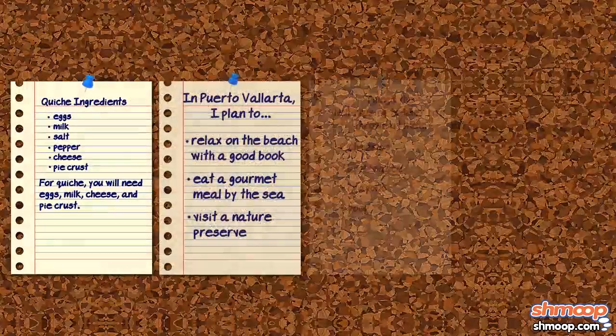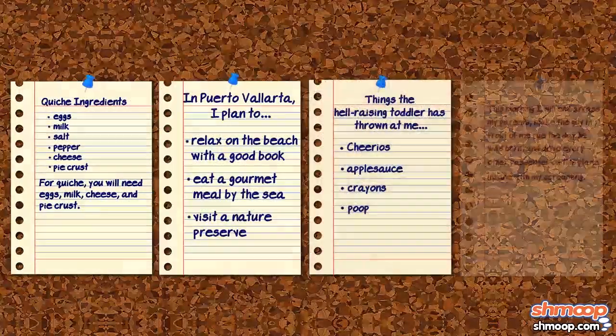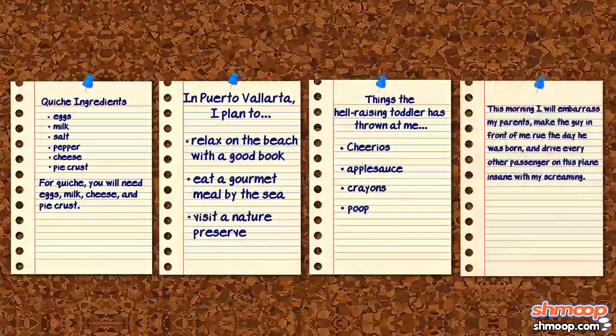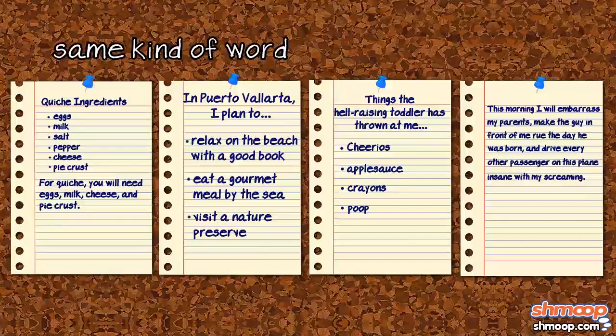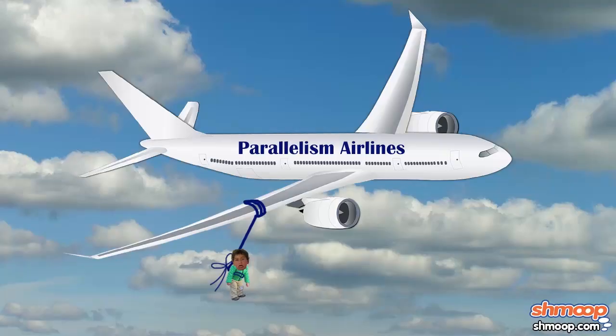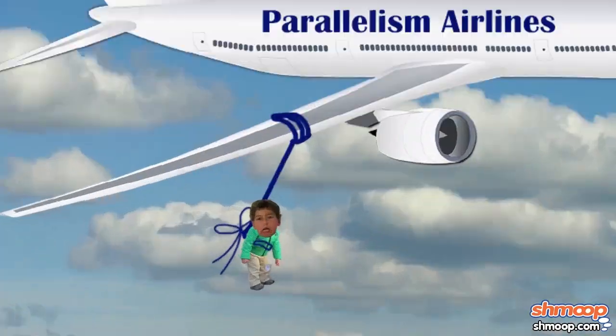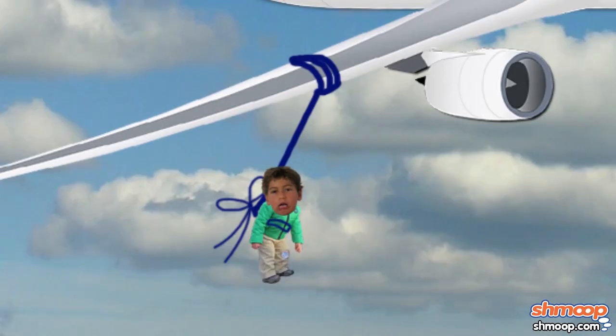Parallelism is what we use to structure lists and sentences containing lists, so that each item starts with the same kind of word and has the same structure. Now, if only little Lucifer would finish the flight traveling perpendicular to the plane, Andy would be oh so much a happier person.